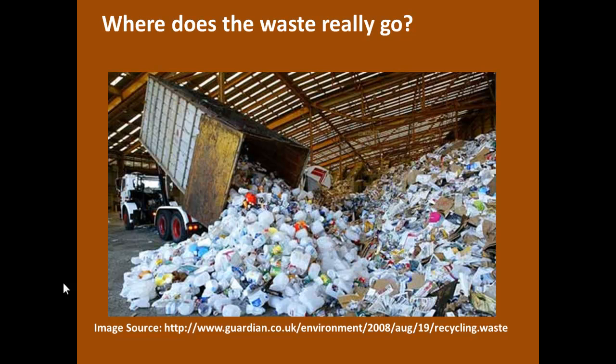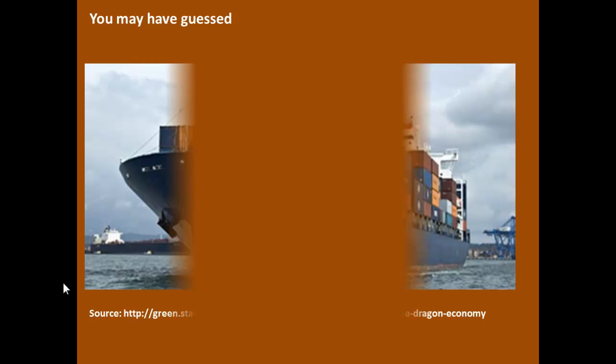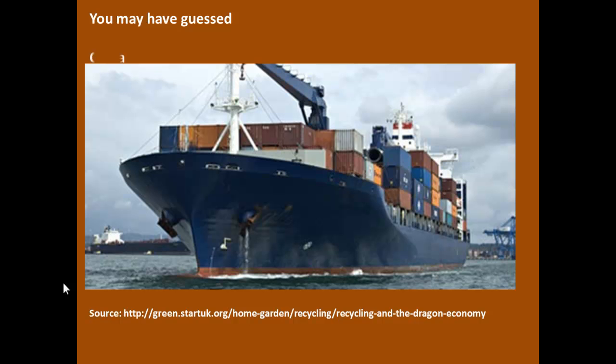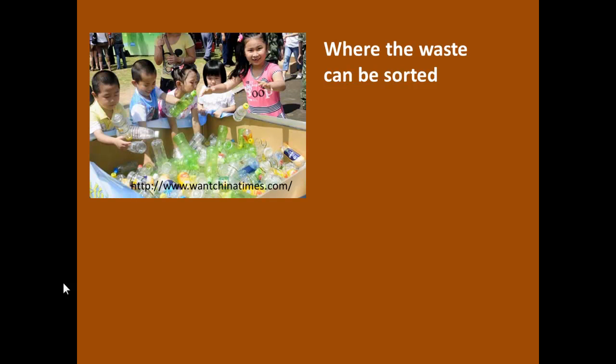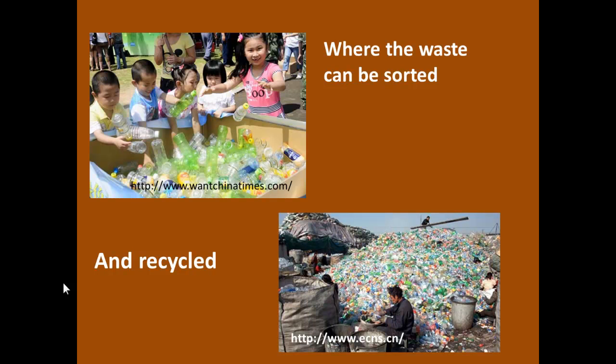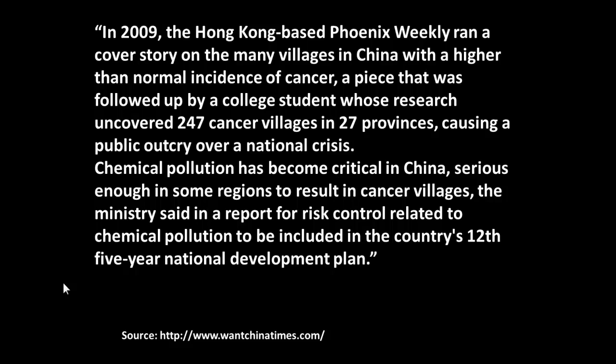How about thinking about what happens to all that waste we are recycling? Let us just consider all that plastic for a moment. Where does it go if it is to be recycled? Remember that ship that brought all the goods from overseas? Well, it has to be filled for the return journey, so much of that plastic is being shipped back overseas, where the waste can be sorted, then recycled, then used to make goods that can be shipped back to the United Kingdom. Not all the waste is treated in this way — some is recycled in the United Kingdom. Sadly, some of the recycling is done under conditions that are less than ideal and causes further pollution. This has led to illnesses including high incidences of cancer in some areas where the recycling is done.